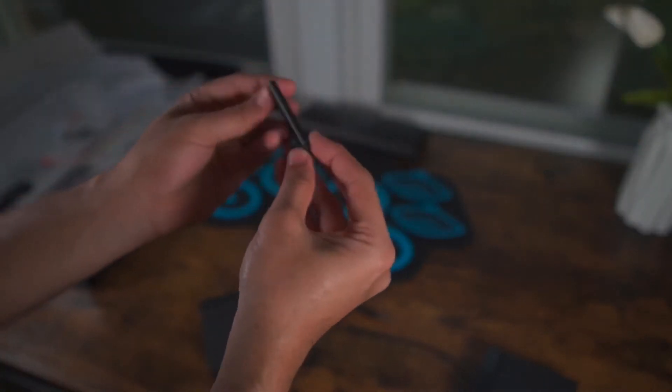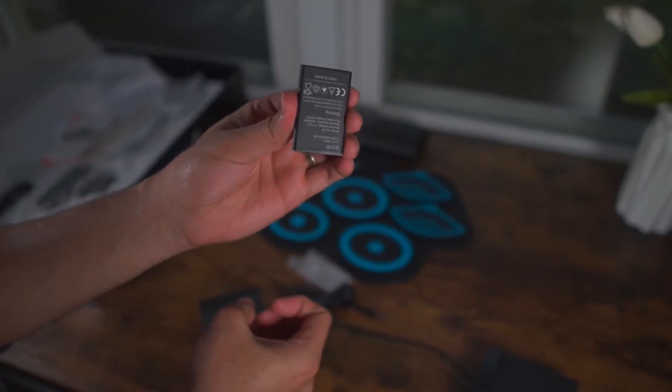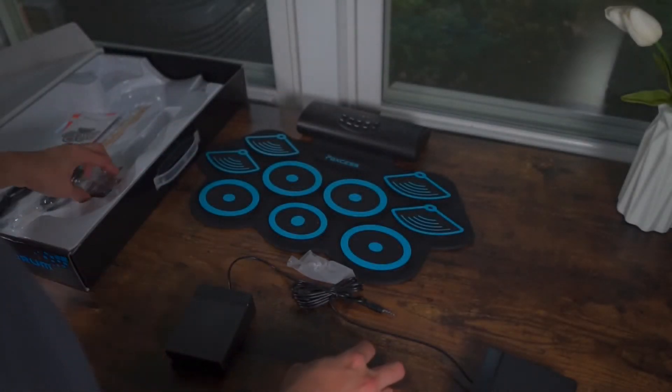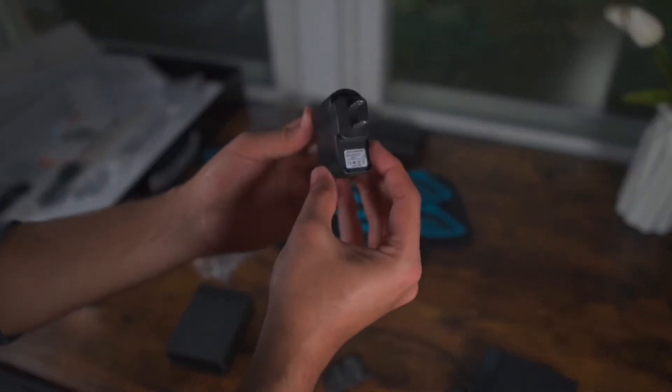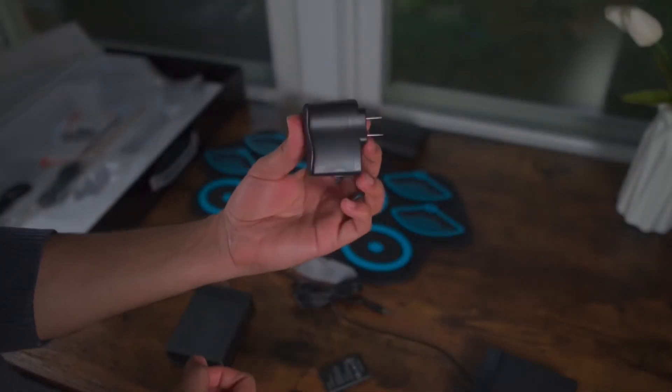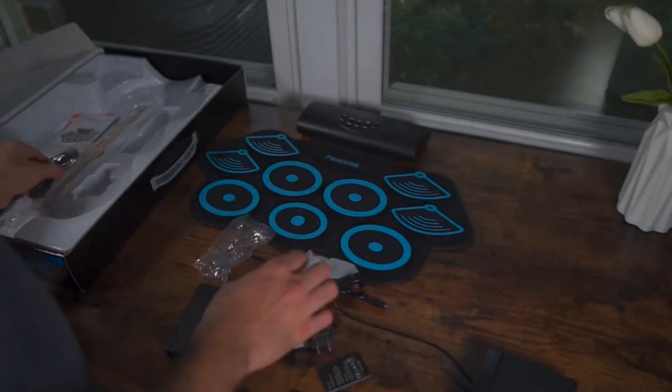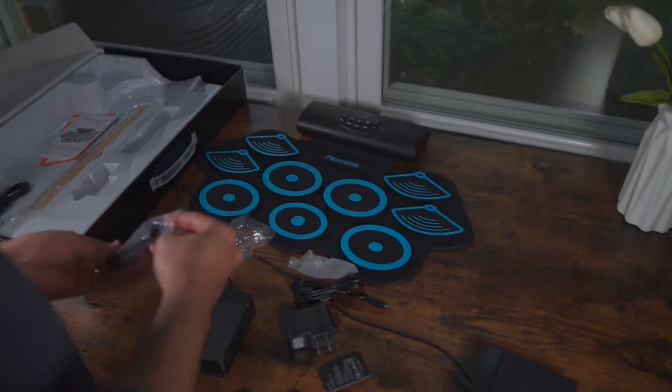And then you get the user manual and the drumsticks of course, and then a few accessories as well. There is the adapter that will power it on. I really like the drumsticks as well - they're a good size.